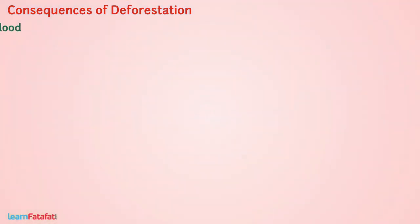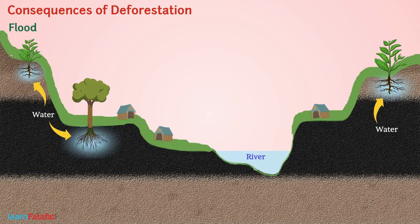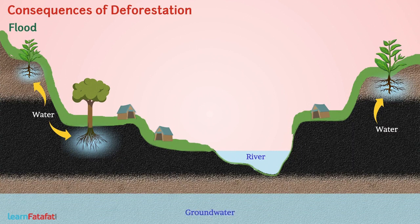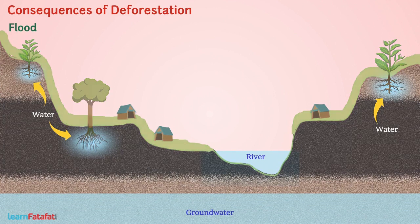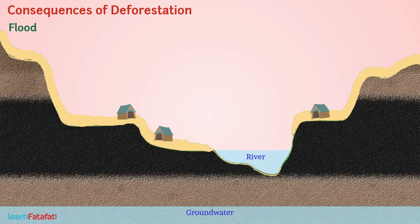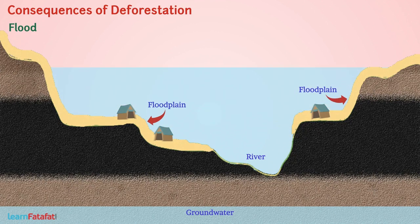Flood. Trees increase the water holding capacity of soil and are also helpful in increasing the groundwater level. Due to deforestation, water cannot be held longer, and so the flow of water from the surface to groundwater reduces, leading to a lowering of groundwater level. This causes the water level in rivers to rise, and if a river cannot hold the increased water level, it brings floods to the river flood plains.